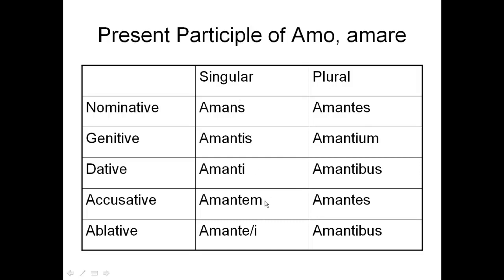The declension goes: amans, amantis, amanti, em, e. You can also use either -e or -i for the ablative form. Then: aces, ium, ibus, aces, ibus. The only thing that really sets this apart from a regular third declension noun is that -i in the genitive: amantium. So that's going to do it for this lecture. Hope this has been helpful and I'll see you in class soon.